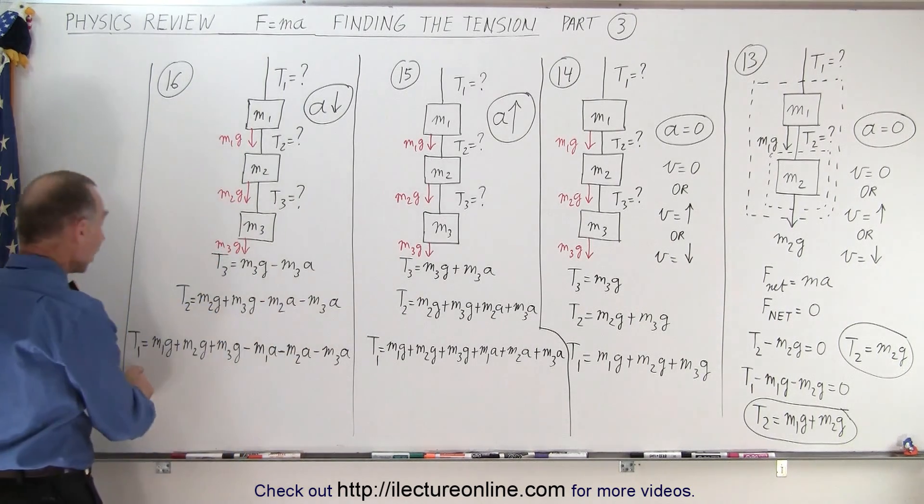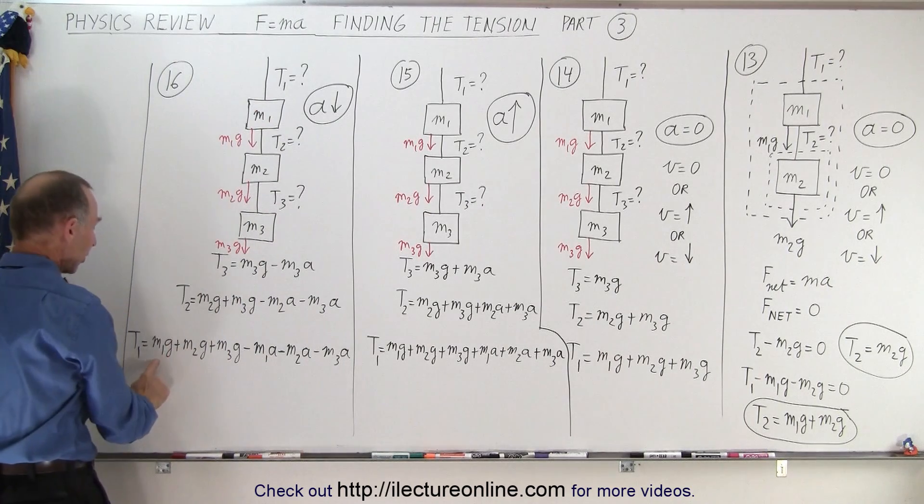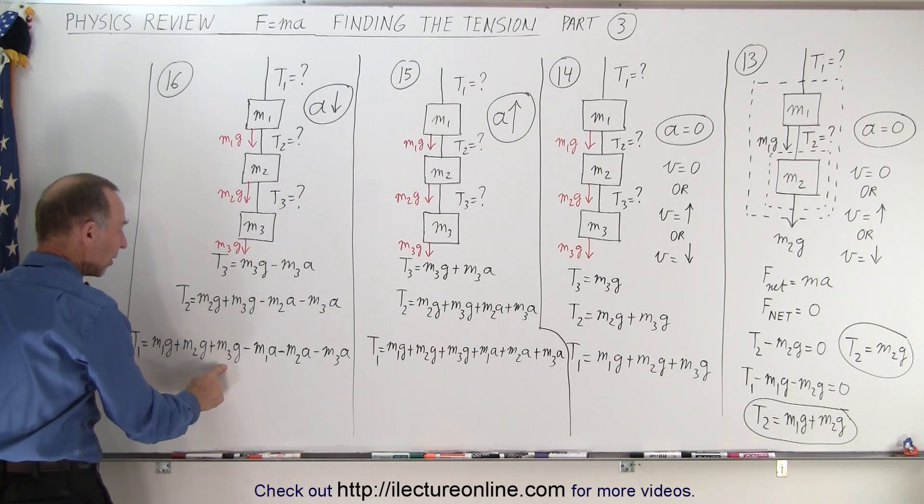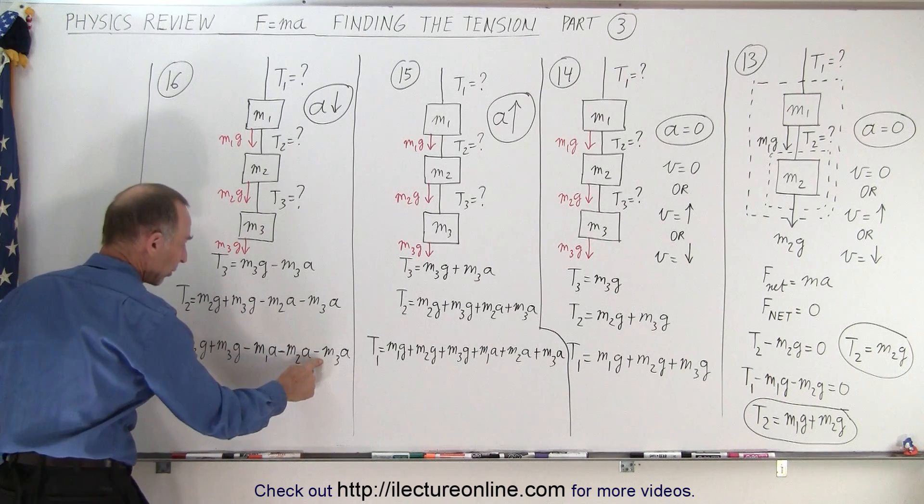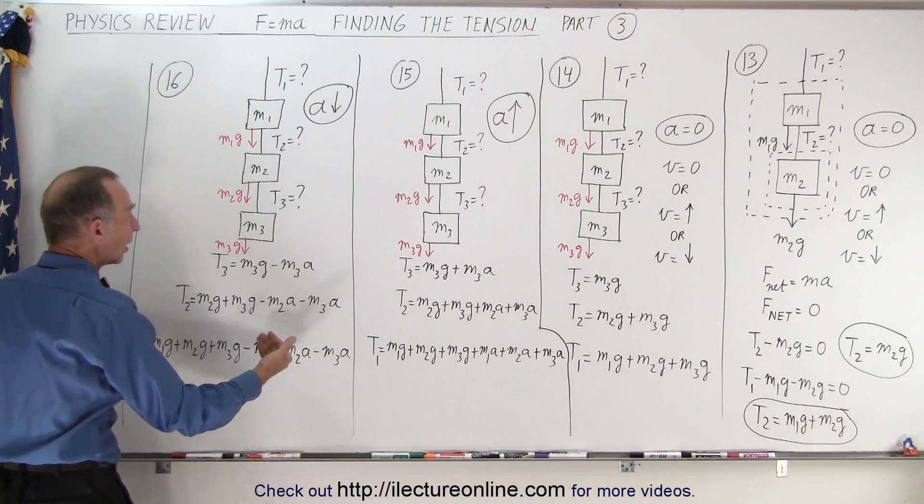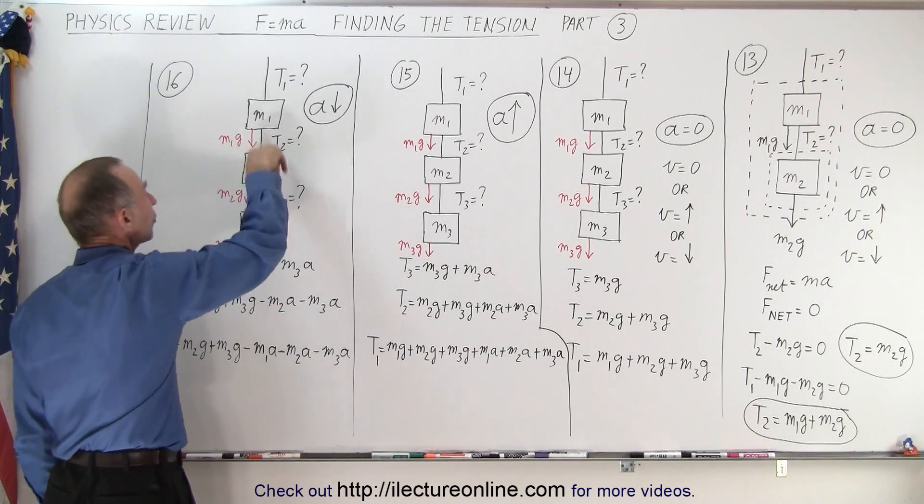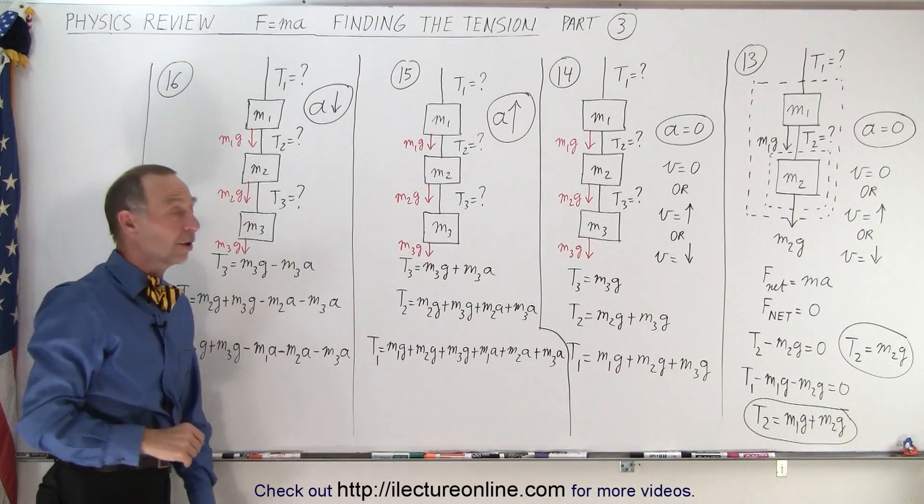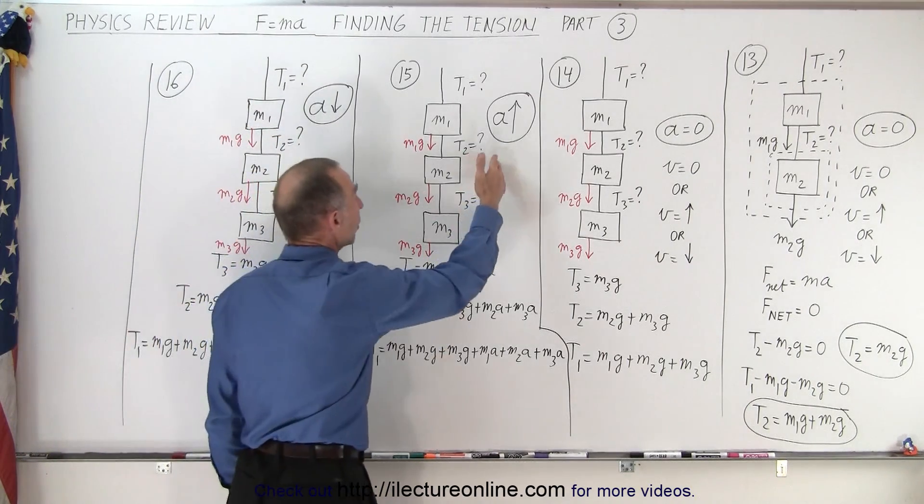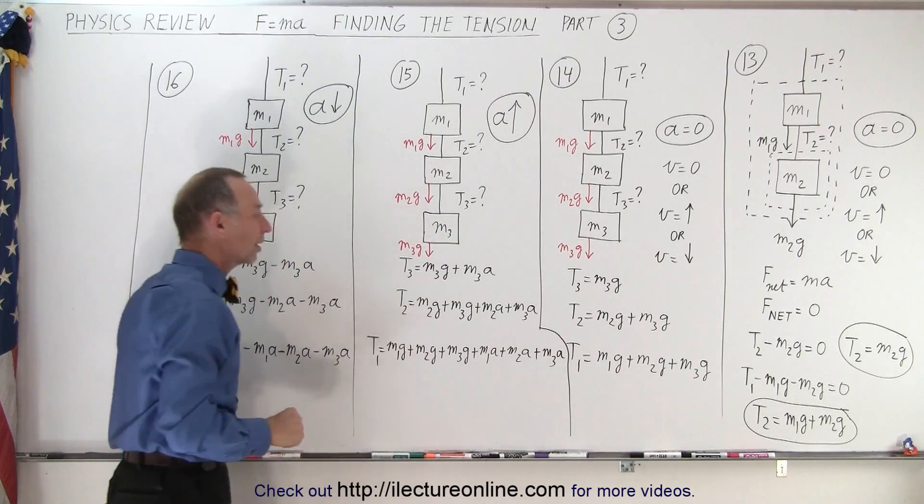And then finally, T1, the one up here, is equal to the sum of the weights of all three masses minus the force to accelerate all three, because notice that the acceleration is downward, which will reduce the tension on the strings, whereas here the acceleration is upward, which will increase the tension on the strings.